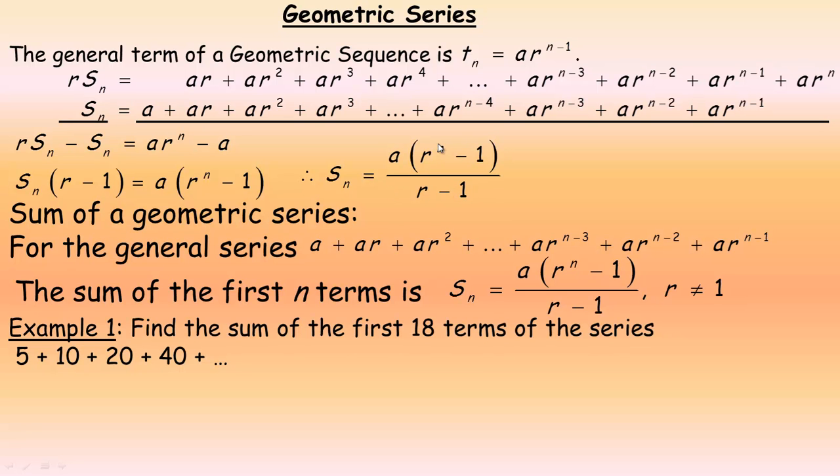So basically it becomes this divided by the r minus 1. Now, this does not divide evenly, because this is r to the n minus 1, where this just is r to the first minus 1. So there is no dividing out there.